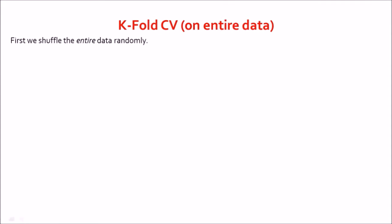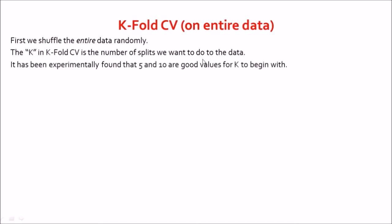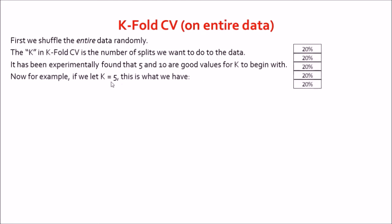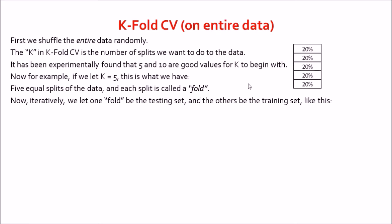The first step in the k-fold algorithm is to shuffle the entire dataset randomly. The k in k-fold CV is the number of splits we want to make. It has been experimentally found that 5 and 10 are good values for k because they do not result in high variance or high bias. If you are not sure what to use, go with 10 or 5. For our example, we let k equal 5, so our 1000 data points are split into 5 folds with 200 records each.